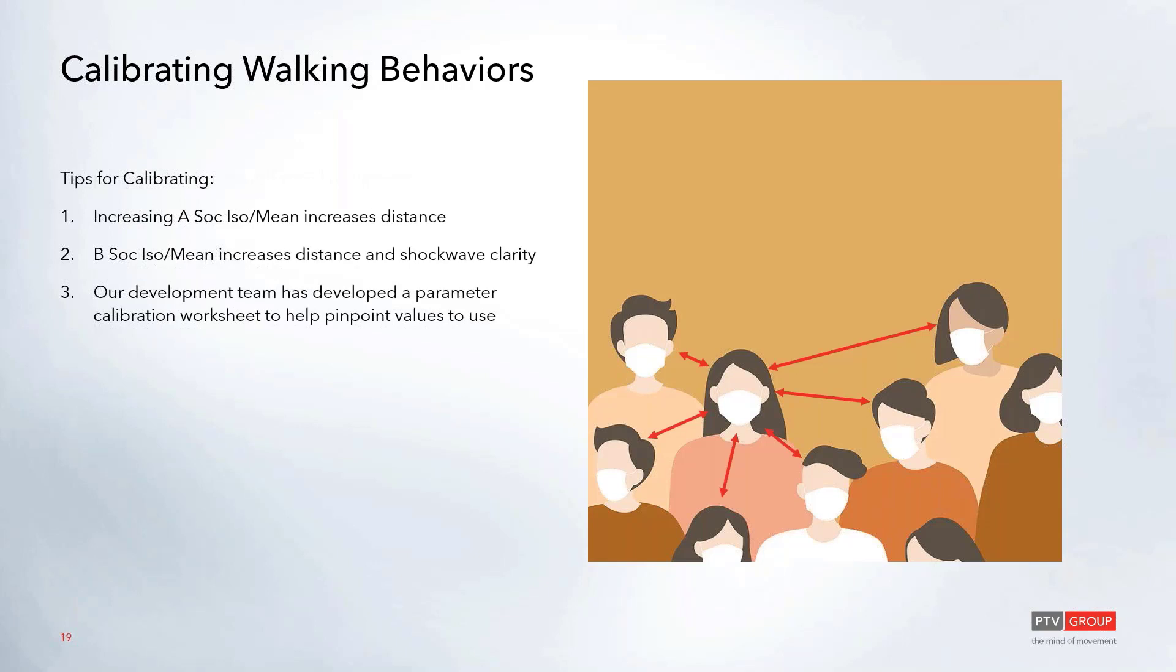Some tips for calibrating: just remember that increasing the asocial parameters, either the isotropic or the mean, increases the general distances between people. So this is the primary distance controlling factor. Increasing it or decreasing it has a lot of sensitivity, so small changes will go a long way. And increasing it will increase the distance between people, thus decreasing the densities. You can think of these parameters as force vectors. So as you increase the value of these parameters, they will increase the magnitude of those force vectors, thus pushing people apart. And the forces are always acting in opposite directions.